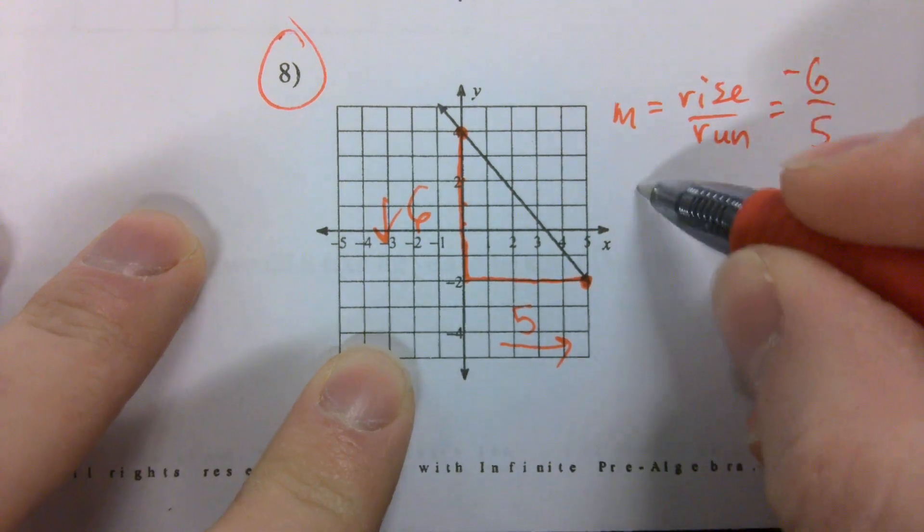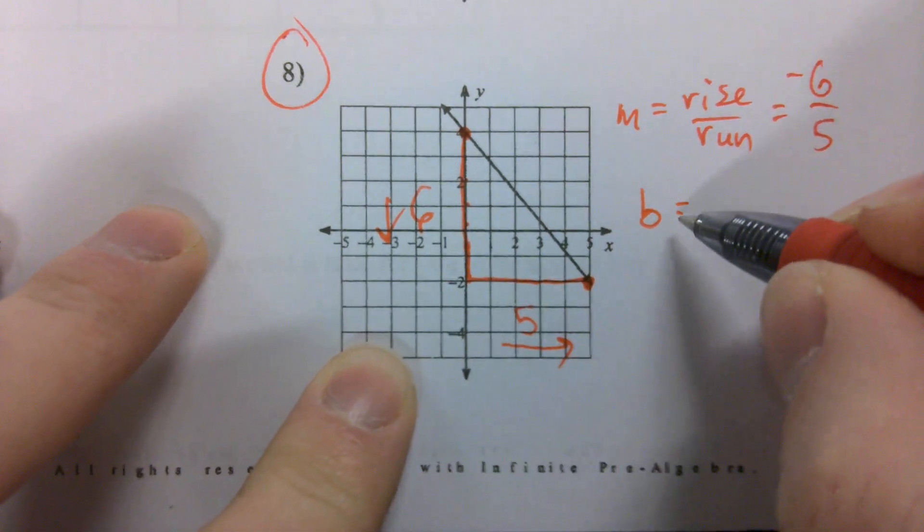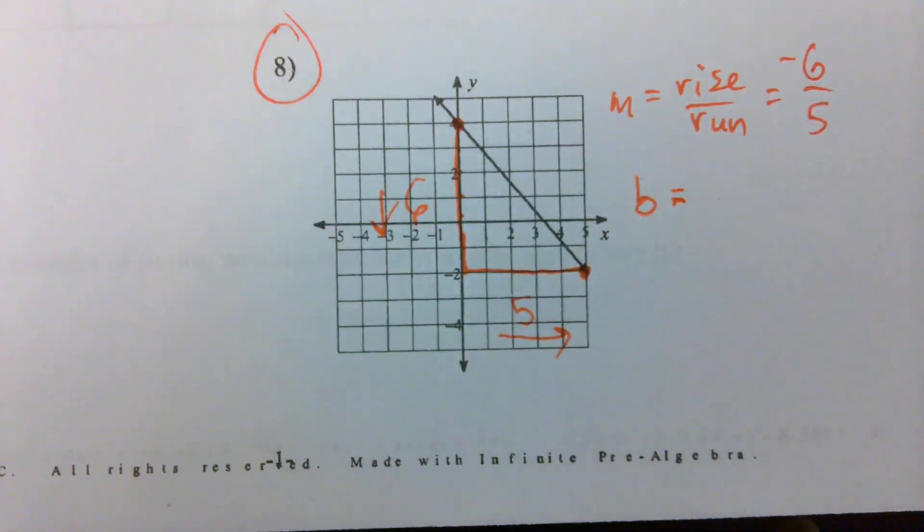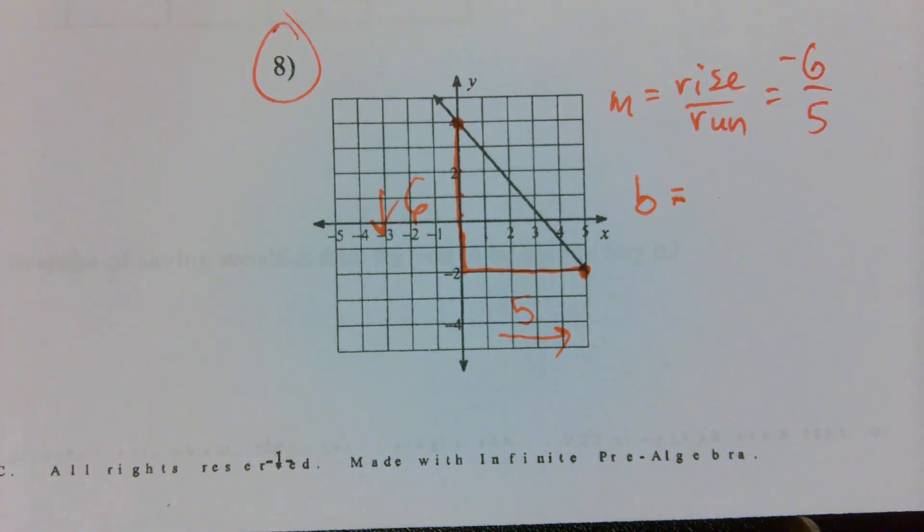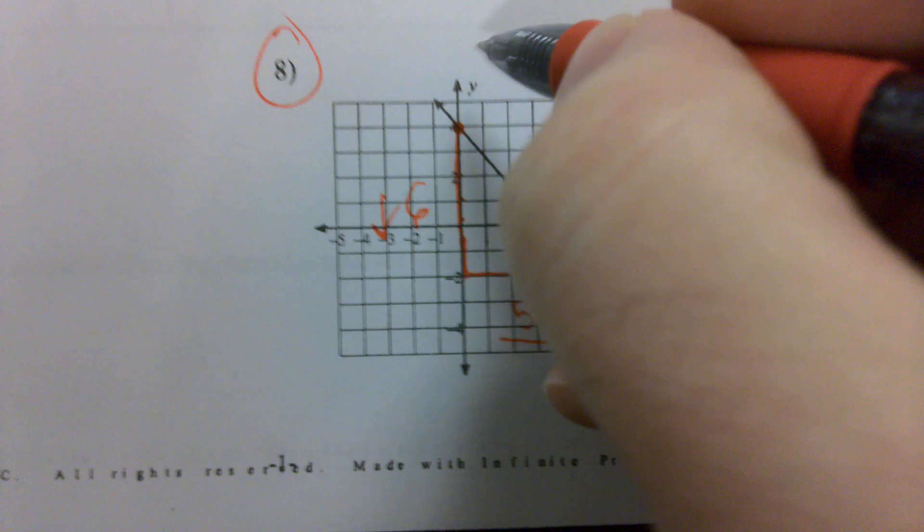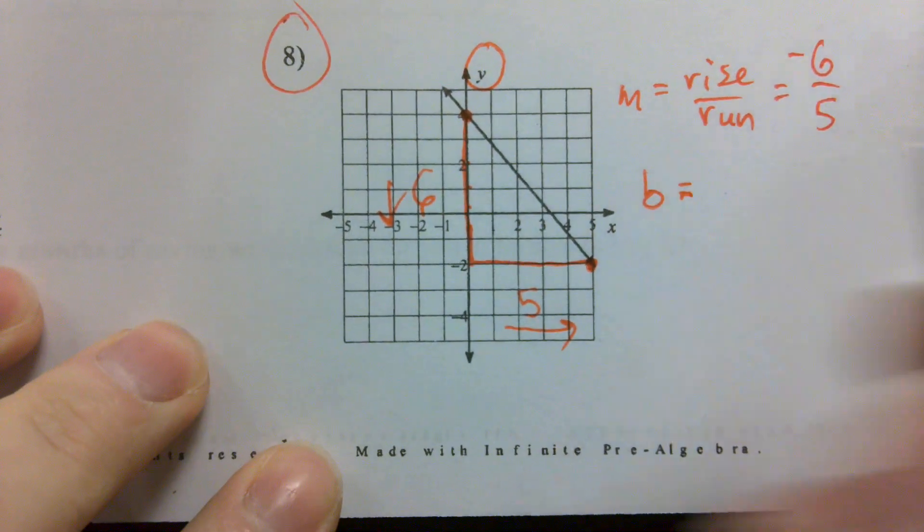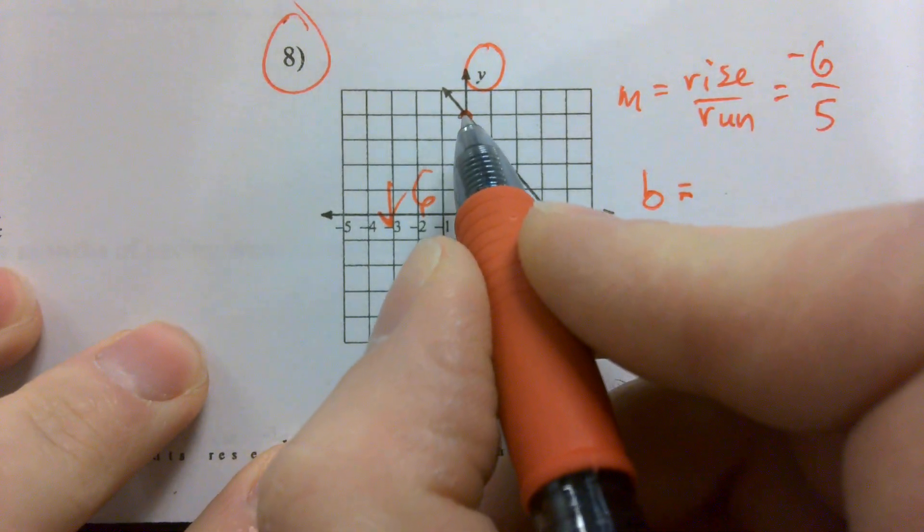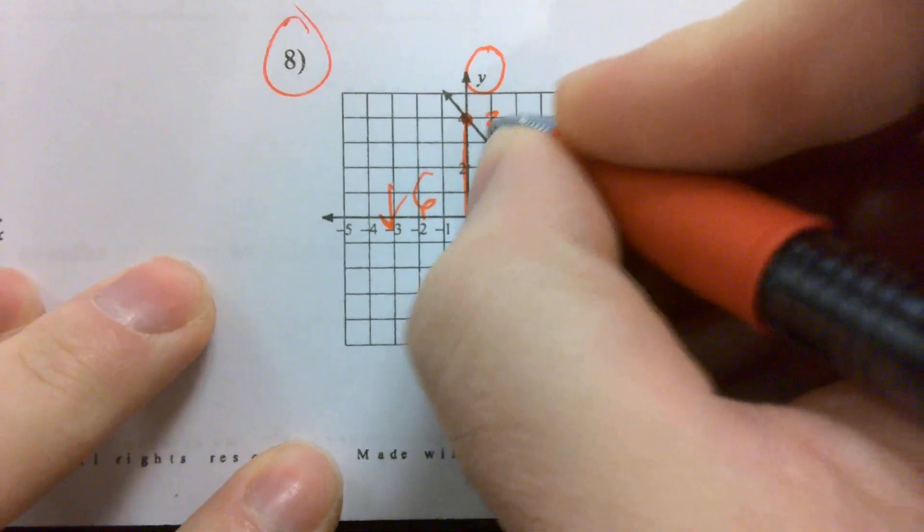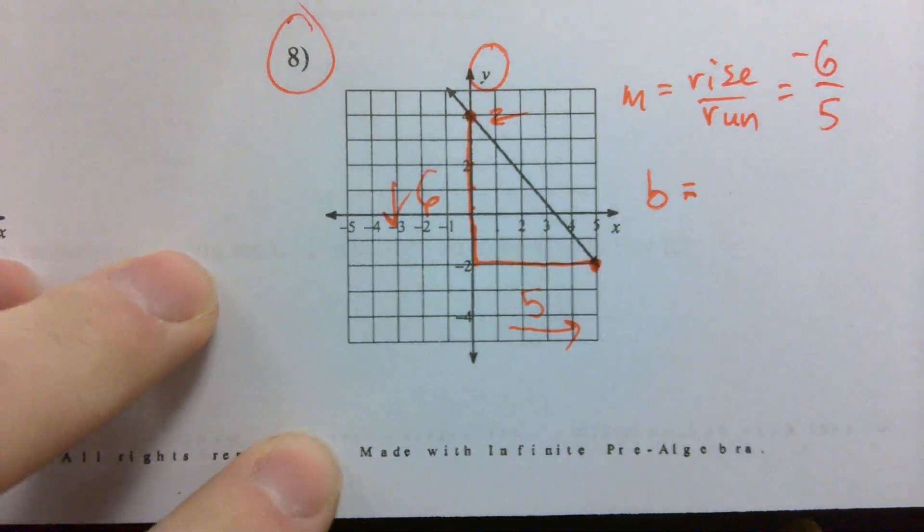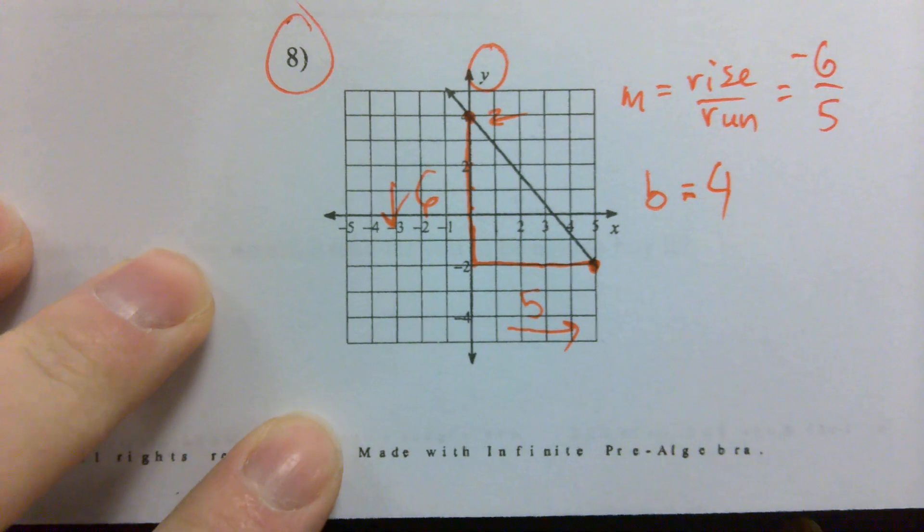But we're not done. We've got to find our B. Which axis do we look towards to find our B, the x-axis or the y-axis? The y-axis right there. I see a point that lands right on that y-axis. Where is that point at? Four. So B is equal to four.